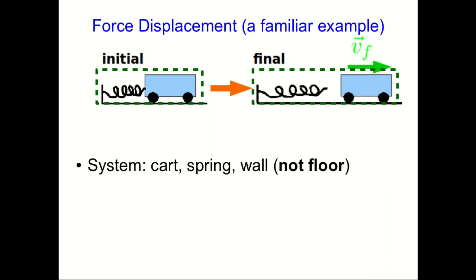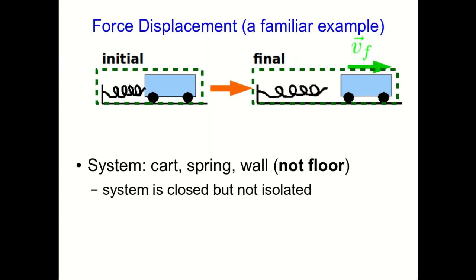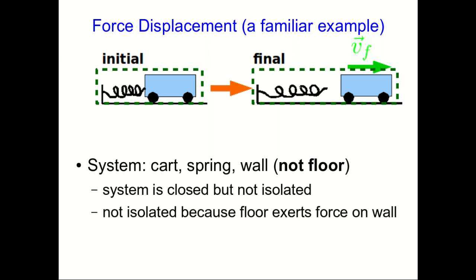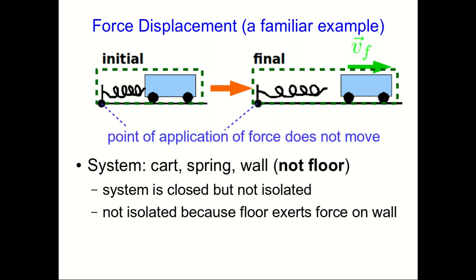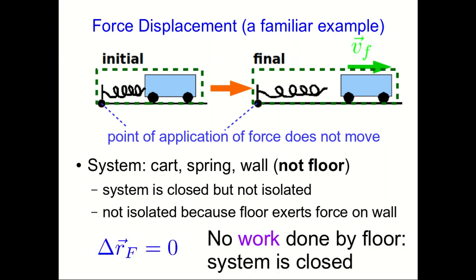I want to bring back a familiar example to show that this gives us a new way of understanding something we've already seen. Here's a cart being launched using a spring, where the system is the cart, spring, and wall — but not the floor. We've already discussed that this system is closed but not isolated. It's not isolated because the momentum changes; it's closed because there's no external state change. Now we have an easier way to think about it: the floor exerts a force on the wall, but the point of application of that force does not move, so the force displacement is zero and that force does no work on the system — that's why the system is closed.